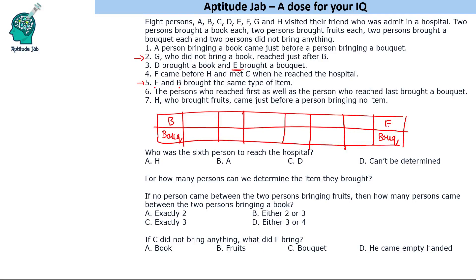The second person is G, since G reached just after B. We are also given that F came before H and met C, meaning C must have come before F and F before H. So C, F, H must appear in that order — it could be positions like C, F, H consecutively or spaced out, which we will figure out.